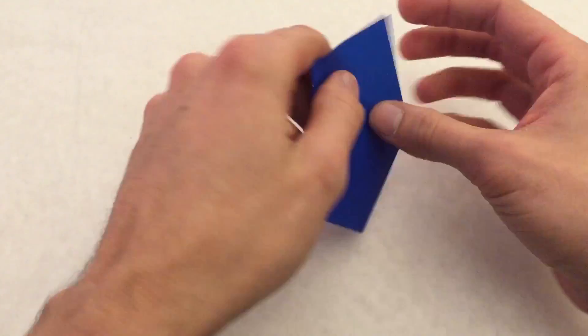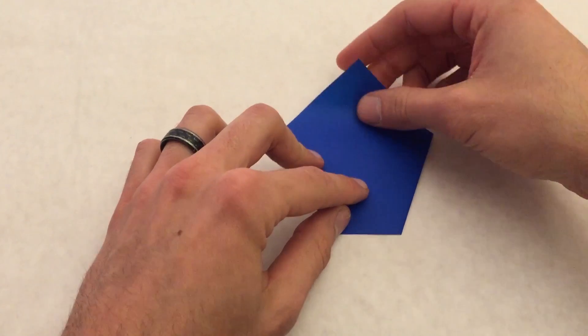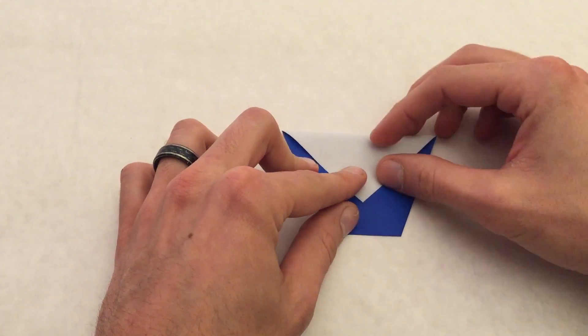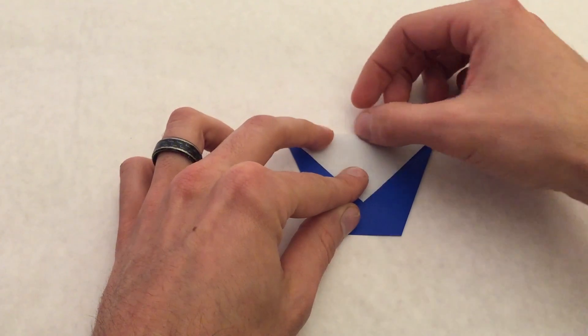Now take the model and flip it over and do the same thing on this side. Fold down this point and make sure it lines up with that same line we just made.